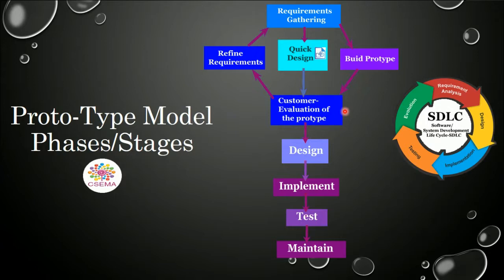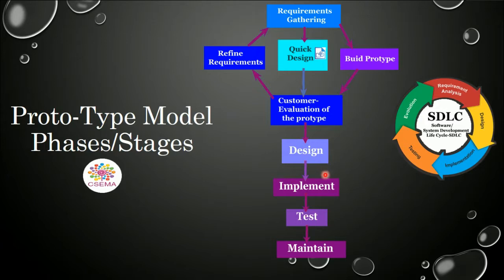After evaluation of the prototype, the requirements are again refined and gathered. A quick design is created and the prototype is built again. When the user finalizes the prototype, the system is designed on the basis of the finalized prototype. After designing and coding, implementation is performed. When the system is implemented, it must be tested, and after testing, the system is maintained to make any required modifications.